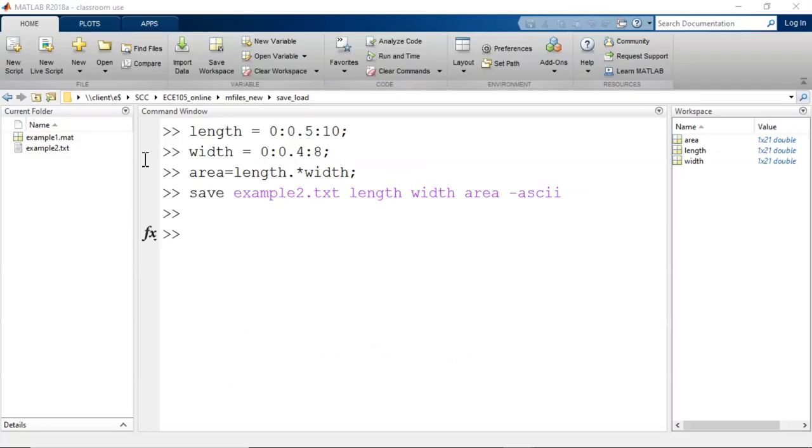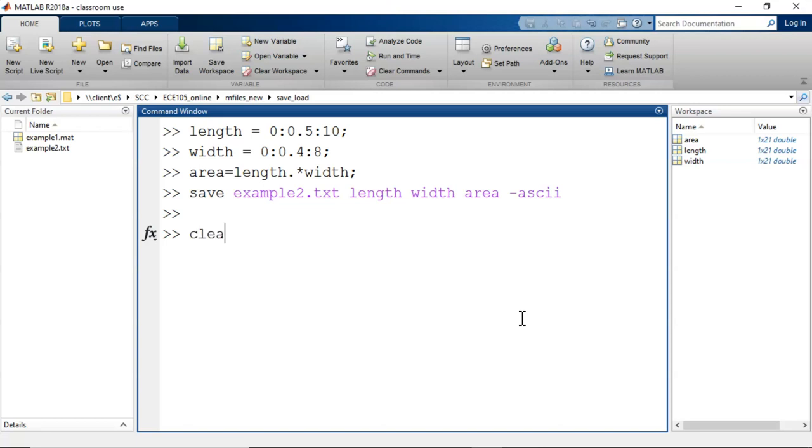Here in MATLAB, I type the clear command. So, the workspace is now empty, and the three variables are gone. If I load in the .mat file, all three of those variables appear again in the workspace.